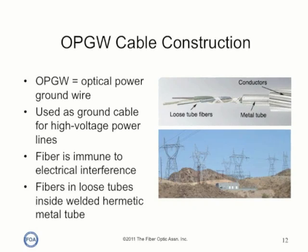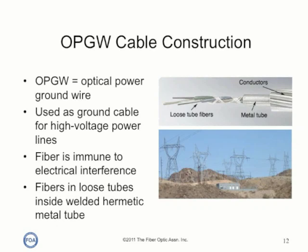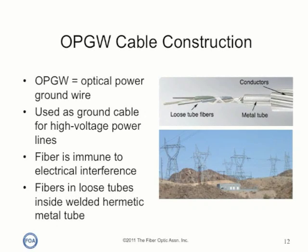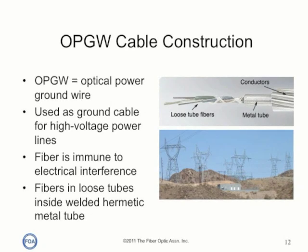Finally, it's all covered by a weather-resistant jacket. The fiber is suspended from the power line towers, then the cable ends are brought to the ground to be spliced. Splice closures are typically mounted on the power line towers.